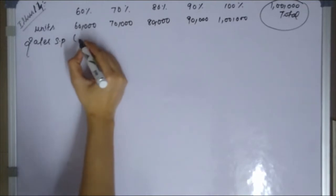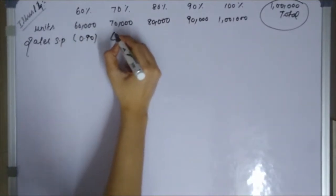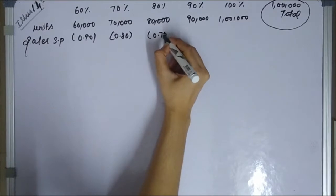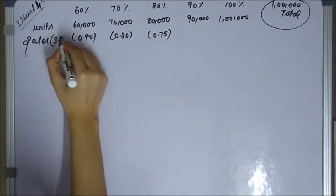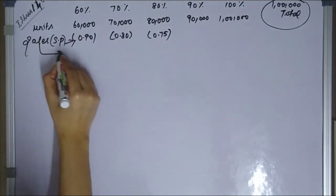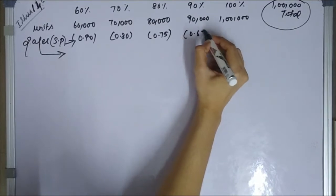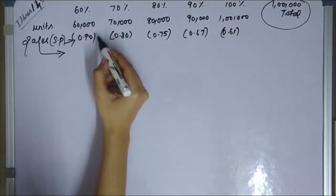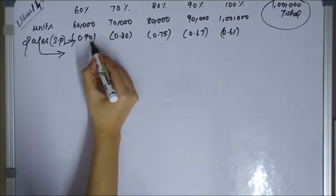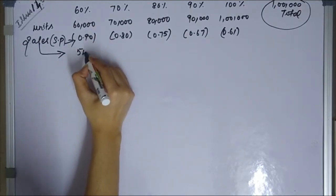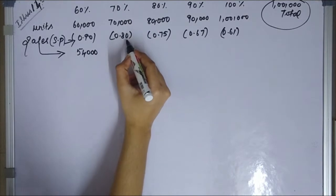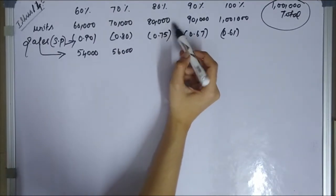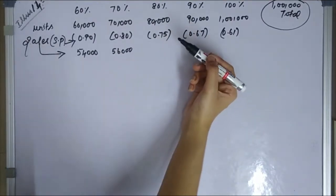The selling price per unit for 60% is 0.90 and for 70% is 0.80; for 80% it is 0.75, then 0.67, and 0.61. Multiplying units by price per unit: 60,000 × 0.90 gives 54,000; 70,000 × 0.80 gives 56,000; and 80,000 × 0.75 gives 60,000.